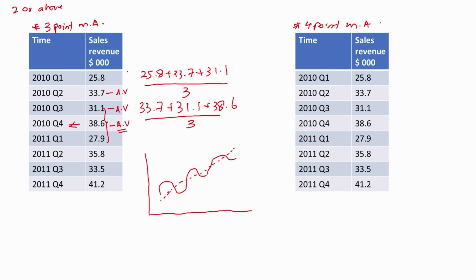Now let's talk about the 4-point moving average method. Here we consider 4 points for the average — the first 4 points for the first average value, then the next subsequent 4 values. Like previously, we take the averages. The issue here is that the average value will lie in the middle of the considered numbers.